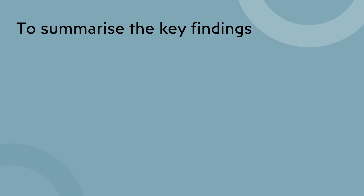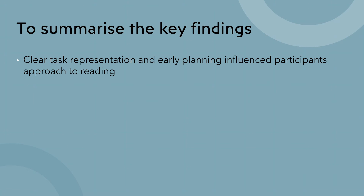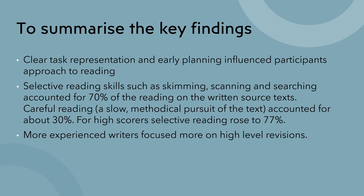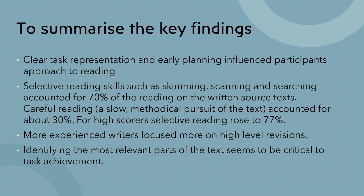Let me summarise the key findings. A clear task representation and early planning seem to influence the way participants read. Selective reading skills such as skimming, scanning, and searching accounted for 70% of the reading on the written source texts, with careful reading accounting for the remaining 30%. More experienced writers focused more on high-level revisions. And identifying the most relevant parts of the text seemed to be critical to task achievement — something the low scoring participants were unable to do.